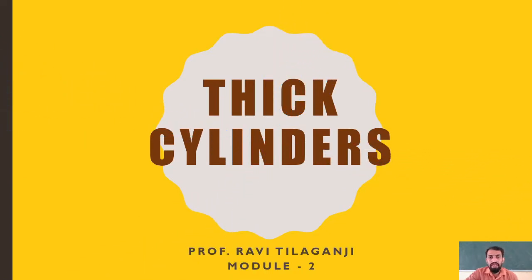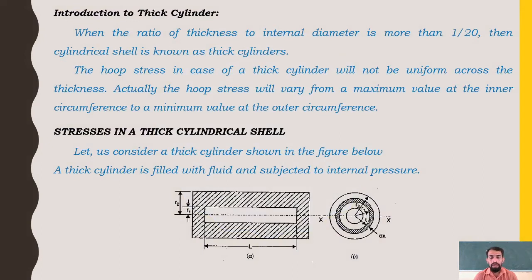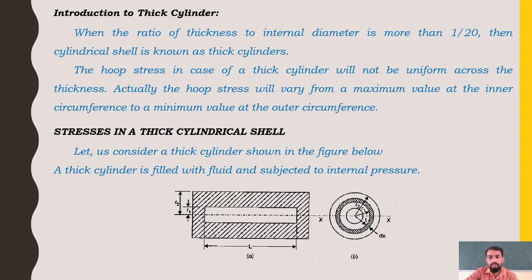Welcome to Strength of Materials. In this video we will be covering thick cylinders, under Module 2. When the ratio of thickness to internal diameter is more than 1/20, then the cylinder shell is known as a thick cylinder. The hoop stress in thick cylinders will not be uniform across the thickness.